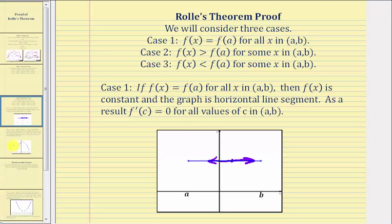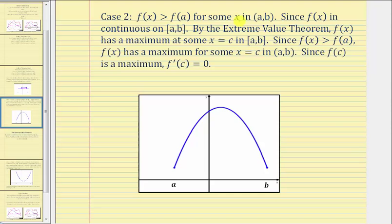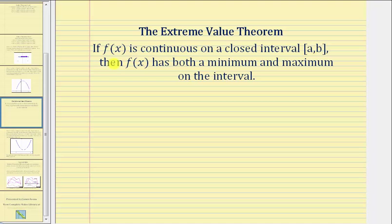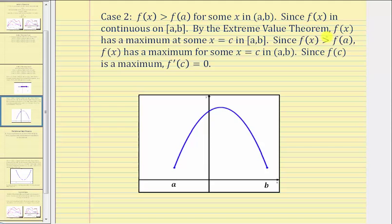For case two, f of x is greater than f of a for some x in the open interval. Since f of x is continuous on the closed interval, by the extreme value theorem — which states that if f of x is continuous on a closed interval from a to b, then f of x has both a minimum and a maximum on the closed interval — we know f of x has a maximum at some x equals c in the closed interval. But since f of x is greater than f of a, f of x has a maximum for some x equals c on the open interval from a to b.